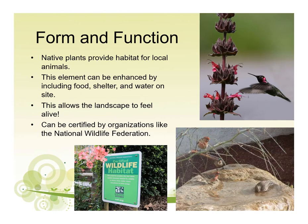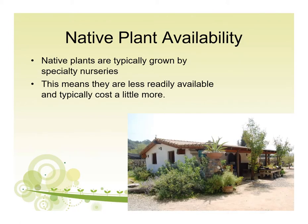Native plants provide habitat for local animals. We can further enhance this by making sure we have the components of food, shelter, and water on a site. This draws in native creatures and can help make the landscape feel alive. You can get your landscape certified by organizations like the National Wildlife Federation, as our botanic garden on campus is certified as a habitat. Specialty nurseries typically grow native plants, so you might have to drive a little further and spend a bit more money to acquire them — but sometimes worth the trip.